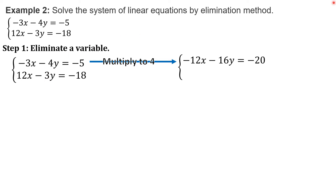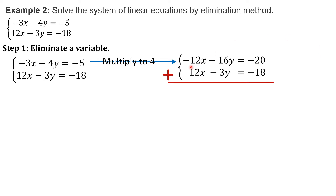Then, just copy the second equation: 12x minus 3y equals negative 18. Now looking at x, they are already the same coefficient with different sign. So we may proceed in adding them. Negative 12x plus positive 12x will give us 0 — cancel. Negative 16y plus negative 3y will give us negative 19y. And negative 20 plus negative 18 will give us negative 38.